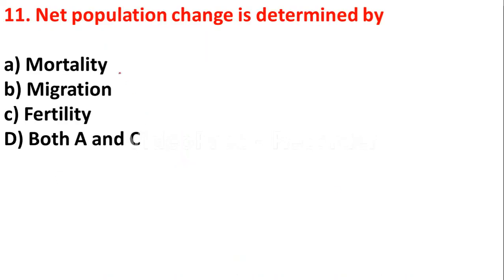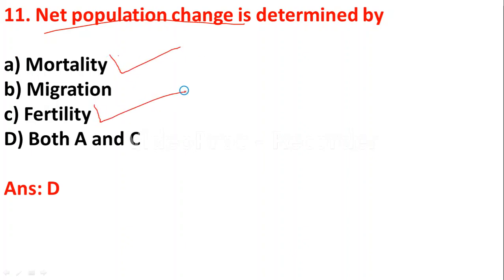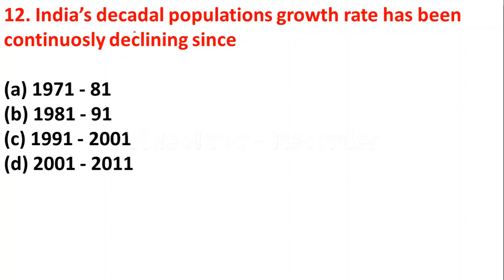Question 11: Net population change is determined by: option A - mortality; option B - migration; option C - fertility; option D - both A and C. Net population change is determined by mortality and fertility, so option D is the right answer.